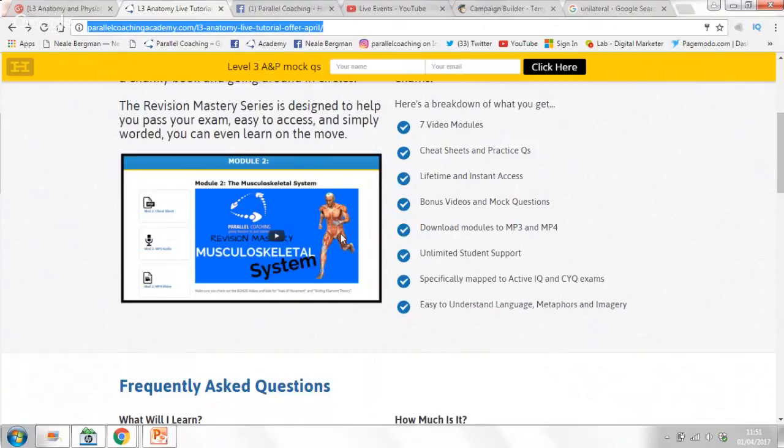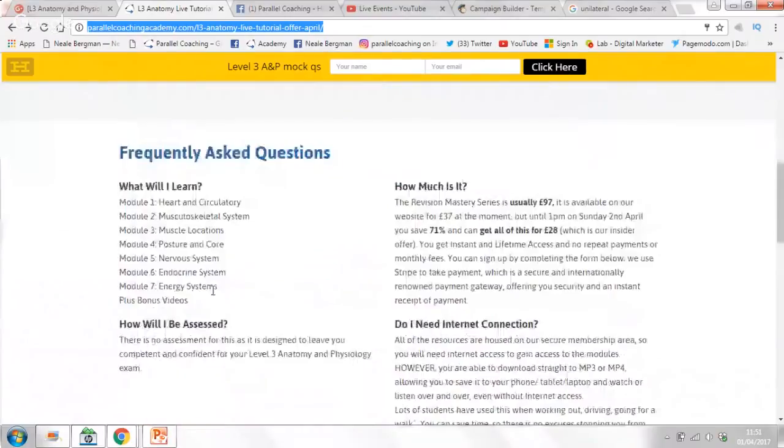In relation to the structure, you've got seven video modules and these are all covered here: heart and circulatory, musculoskeletal, muscle locations, posture and core, nervous system, endocrine and energy systems as well. There's a lot of bonus videos in there as well.